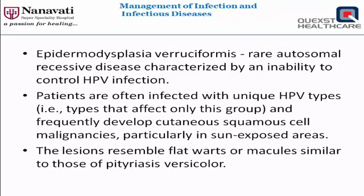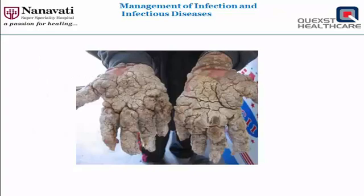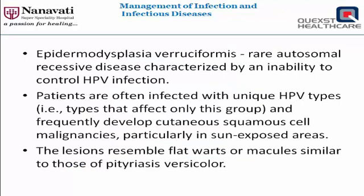Epidermodysplasia verruciformis is a rare autosomal recessive disease characterized by an inability to control HPV infection. Patients are often infected with unique HPV types associated only with this group and develop cutaneous squamous cell malignancies, particularly in sun-exposed areas. The lesions resemble warts or macules similar to pityriasis versicolor in early stages, and full-blown epidermodysplasia verruciformis can look quite severe.